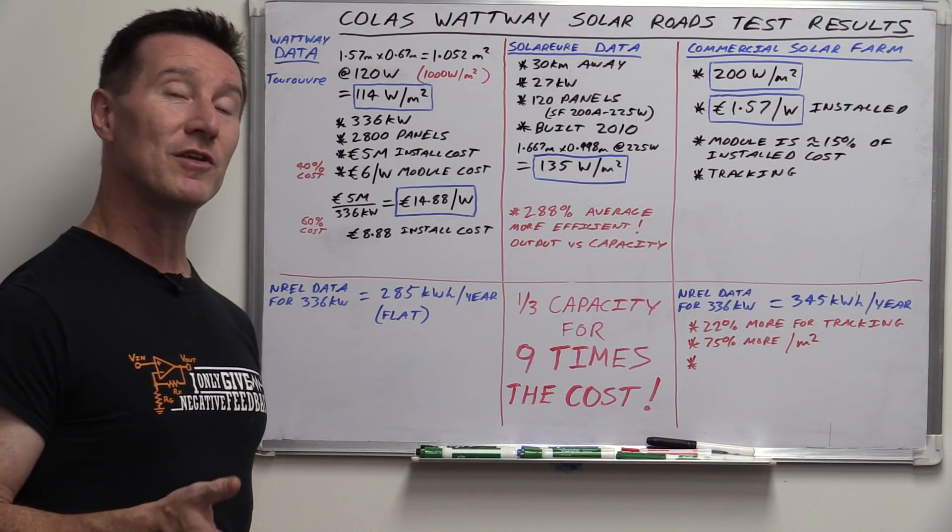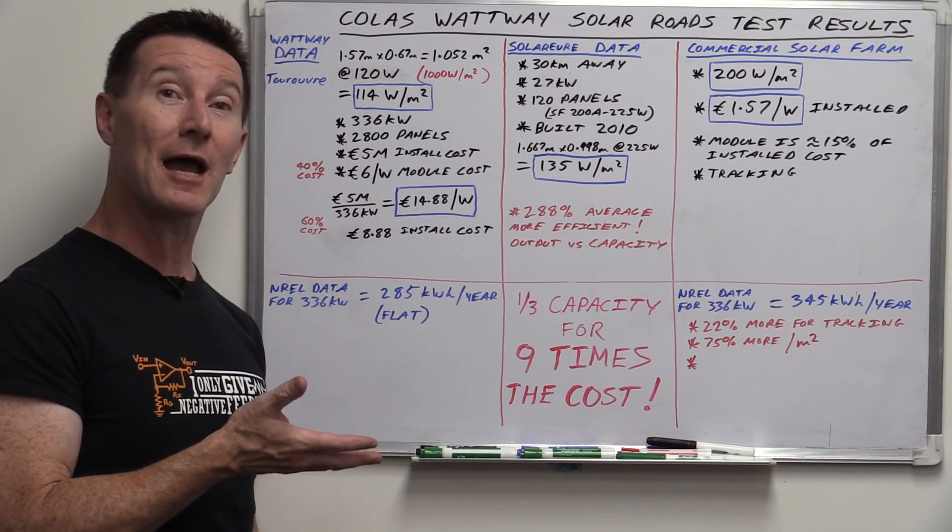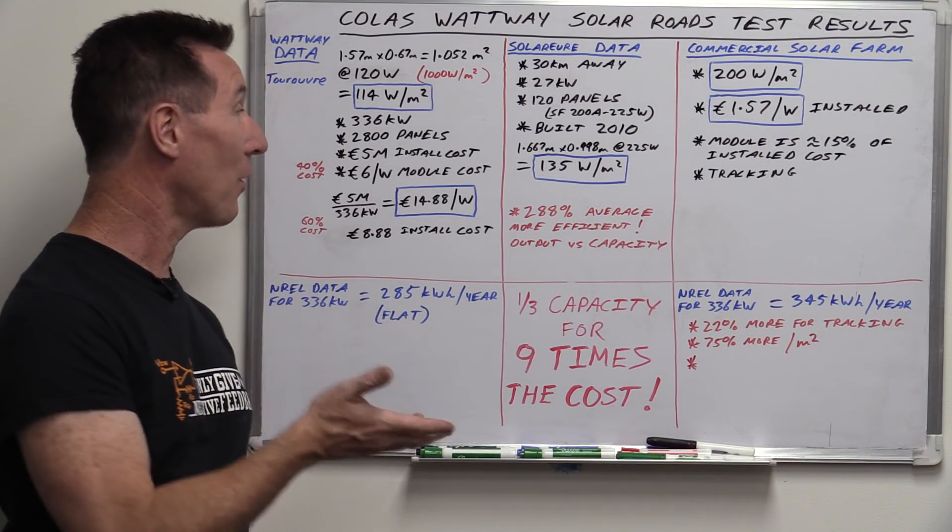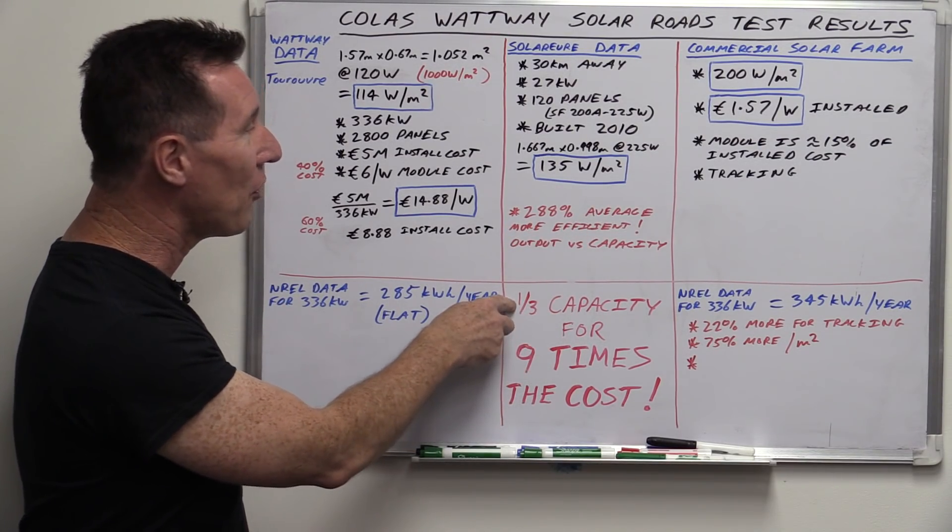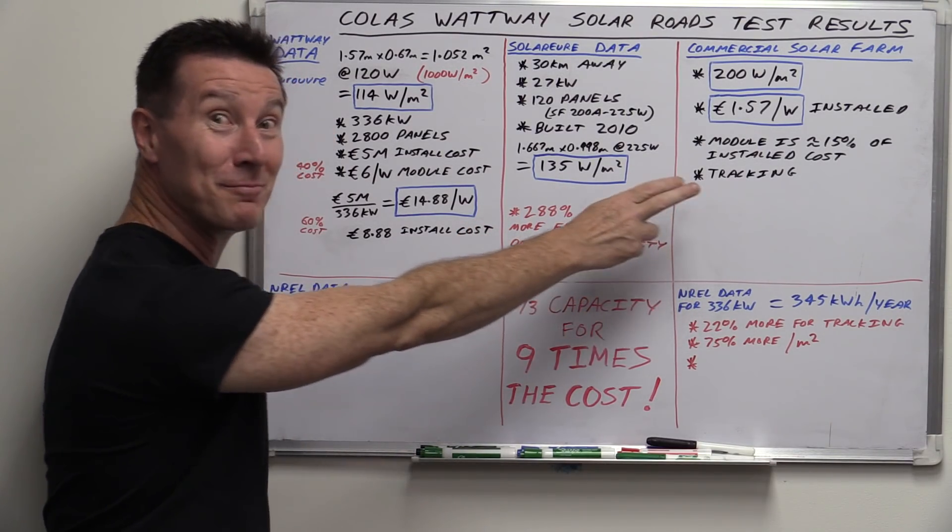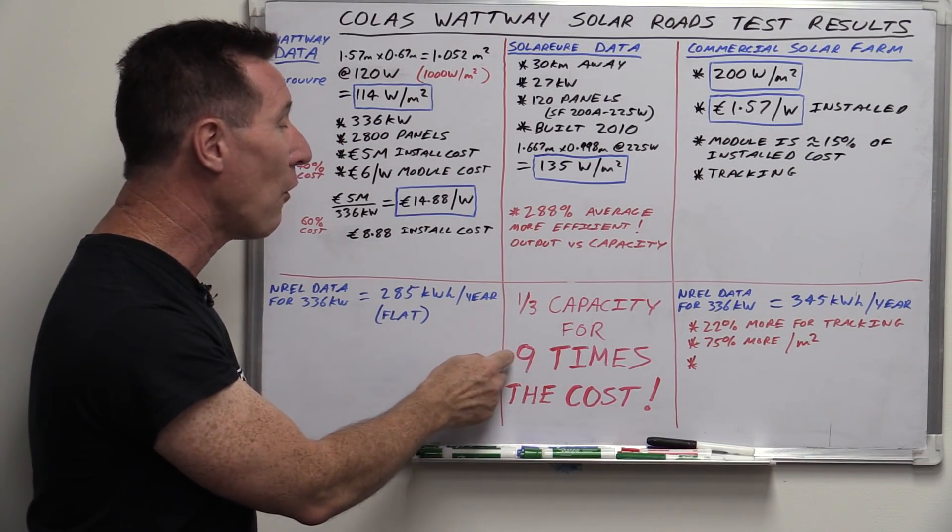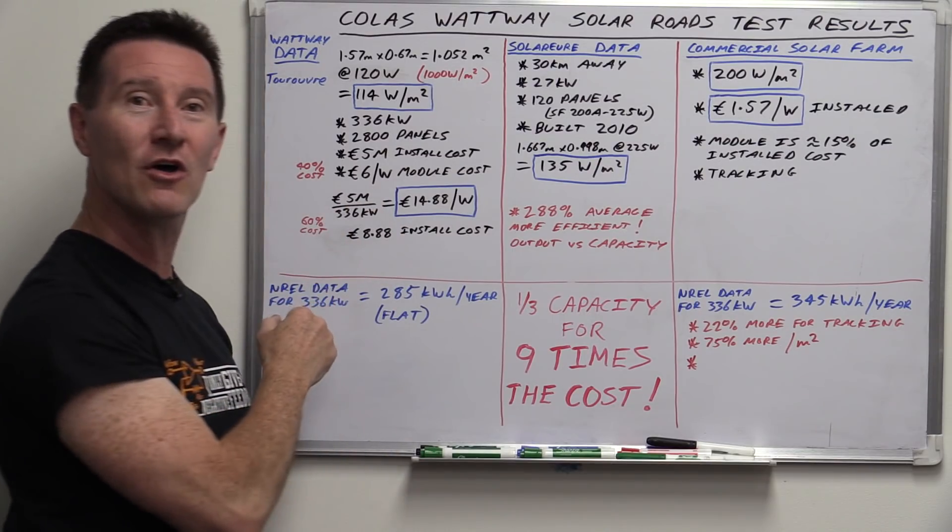So in the previous video, I came to the conclusion that at best, it was half the output for three times the cost. What is it here? Roughly one third the capacity. I mean, it's going to be even worse than that, as I said, compared to a commercial solar farm. So I'm being very generous here for nine times the installation cost.